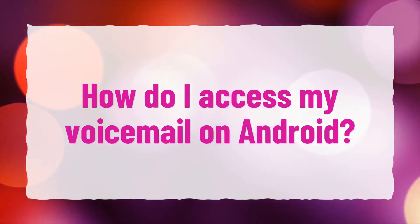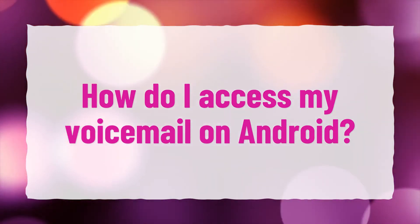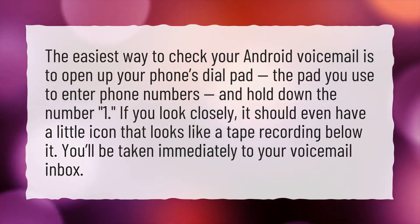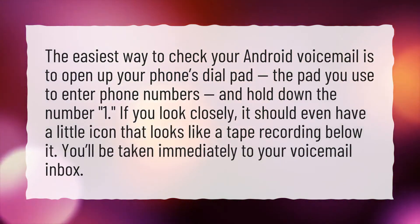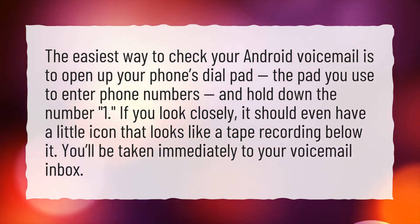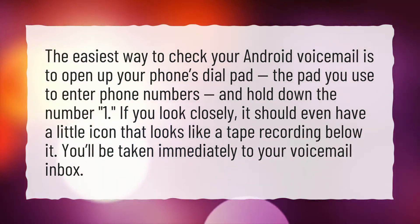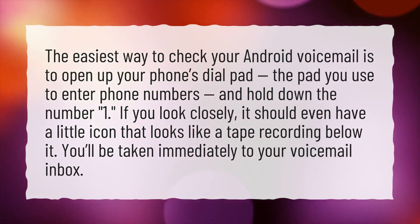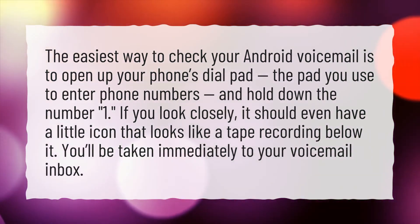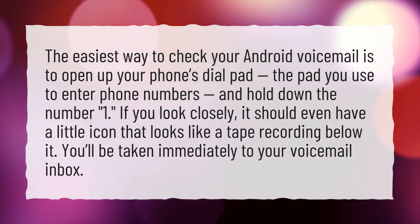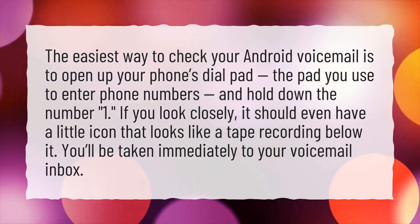How do I access my voicemail on Android? The easiest way to check your Android voicemail is to open up your phone's dial pad — the pad you use to enter phone numbers — and hold down the number 1. If you look closely, it should even have a little icon that looks like a tape recording below it. You'll be taken immediately to your voicemail inbox.